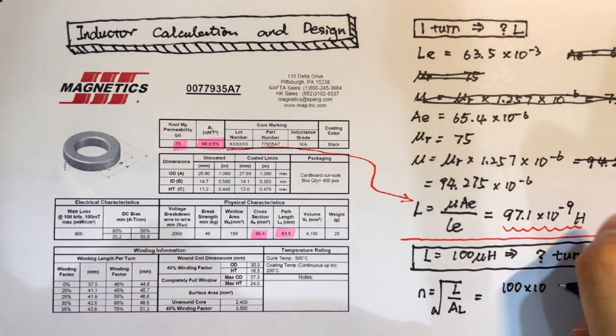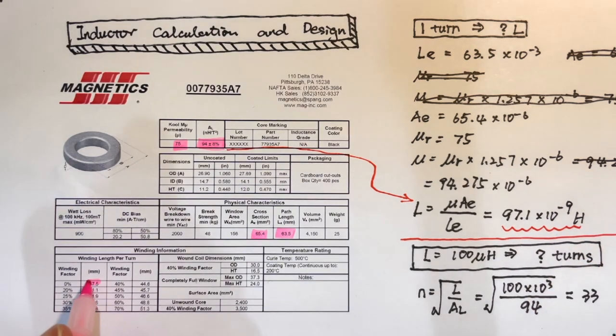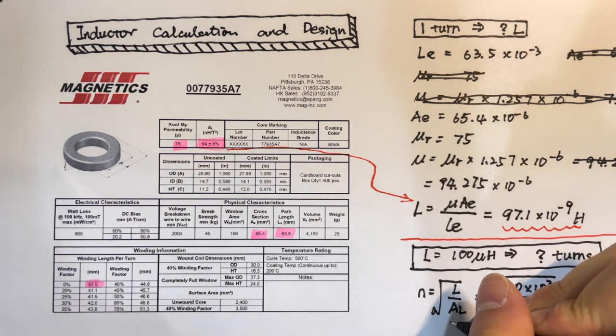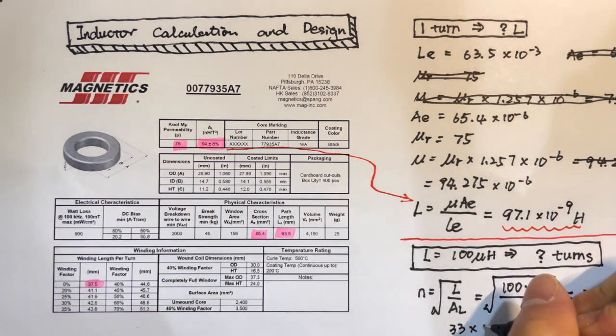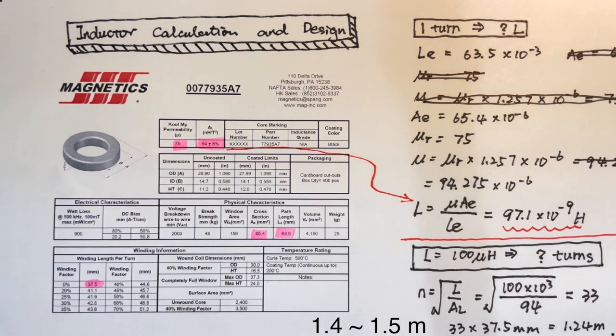We know we need 33 turns winding. We can use this 37.5 mm as one turn length times 33 turns, we get 1.24 meters. I suggest you cut 1.4 to 1.5 meters wire for your inductor.